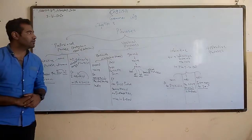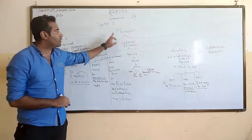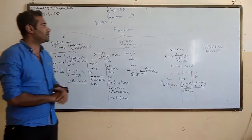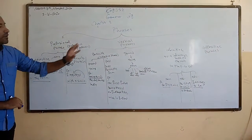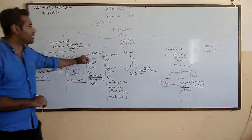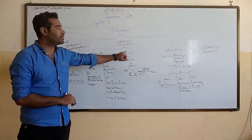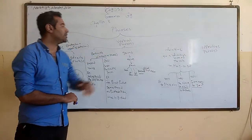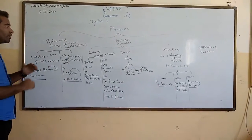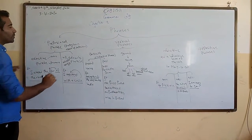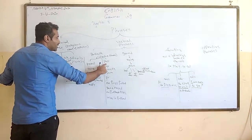The second type of phrases is the verbal phrase. In the verbal phrase, we have three kinds: the participle phrase, the gerund phrase, and the infinitive phrase. Let's start with the participle phrase. We have two kinds of participle phrases: the present one and the past one.